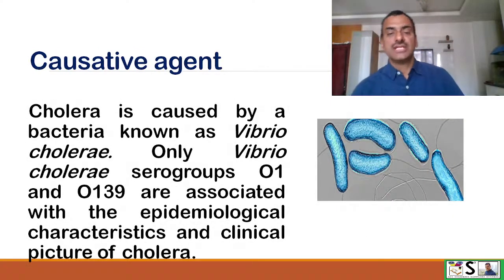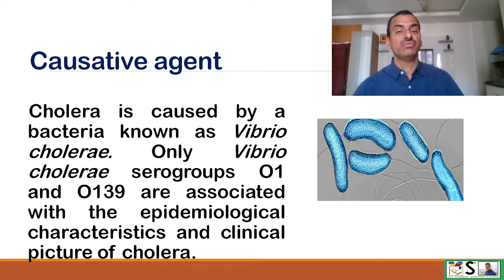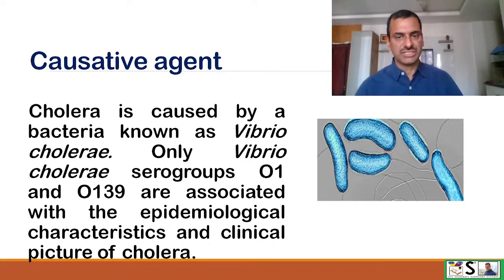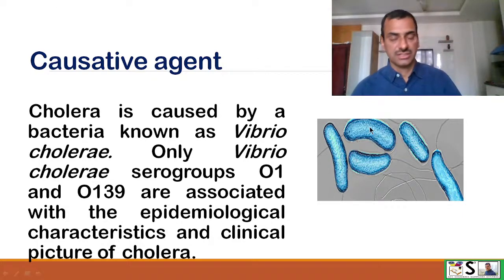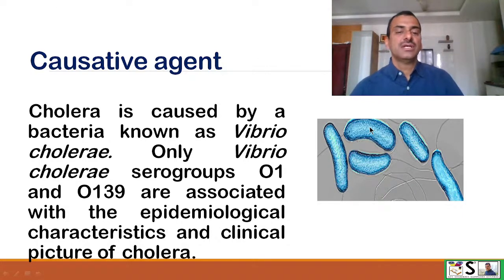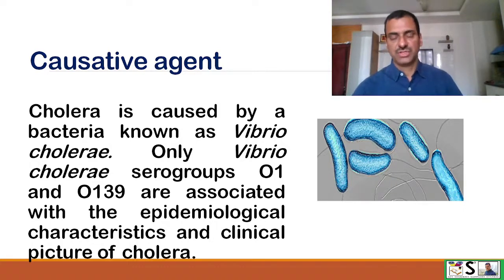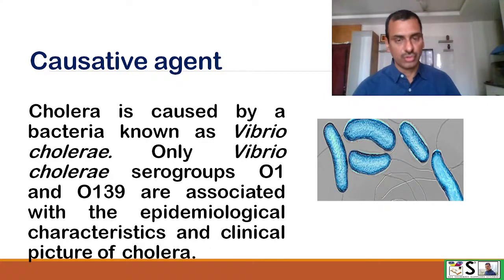Cholera is caused by a bacteria known as Vibrio cholerae. Vibrio means comma-shaped, so this is a comma-shaped bacteria. Vibrio cholerae has two serotypes which are associated with the epidemiology of cholera.